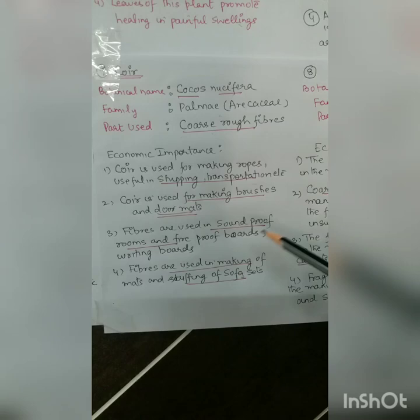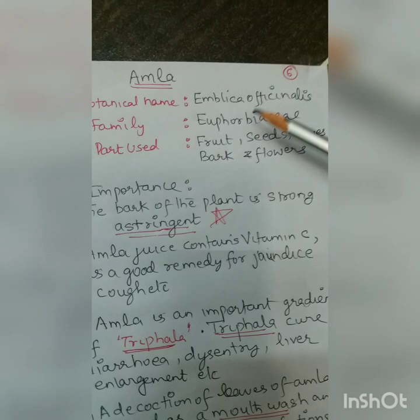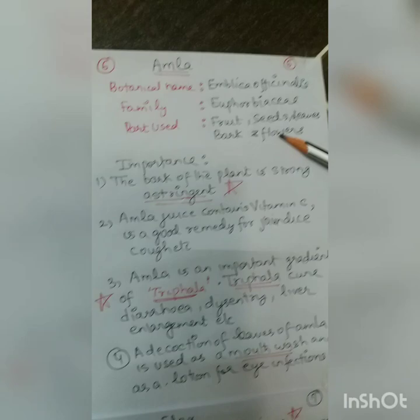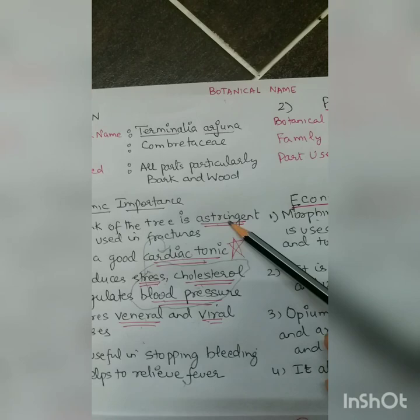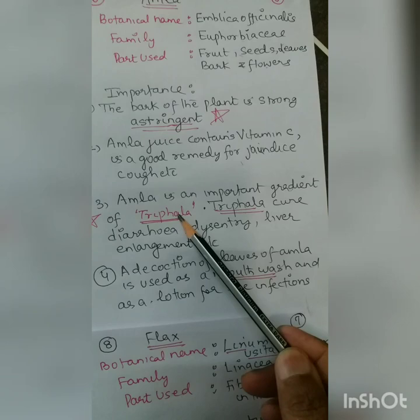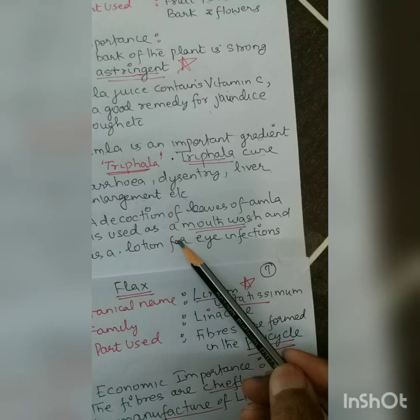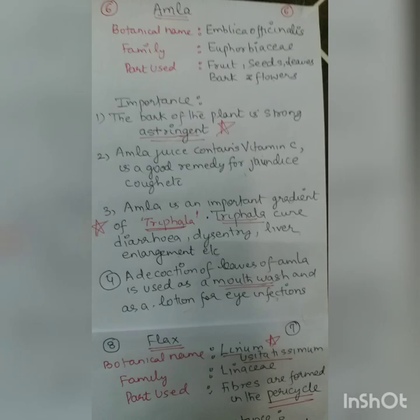Next is Amla. Botanical name is Emblica officinalis, family Euphorbiaceae. All parts — fruit, seed, leaves, bark, and flowers — are useful. Like Arjun, it is astringent. Amla juice contains vitamin C and is a good remedy for jaundice. Amla is an important ingredient of Triphala, which cures diarrhea, dysentery, and liver enlargements. A decoction of amla leaves is used in mouthwash and as a lotion for eye infections. Amla prevents scurvy as a source of vitamin C.